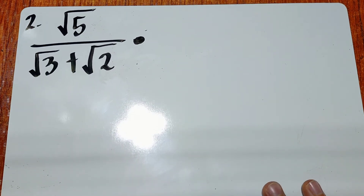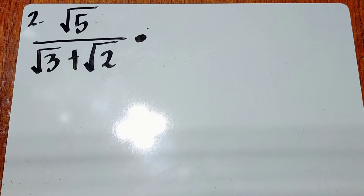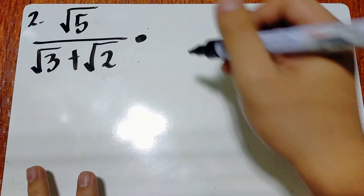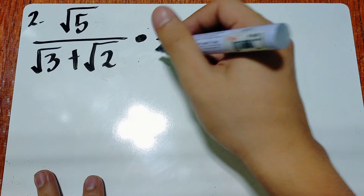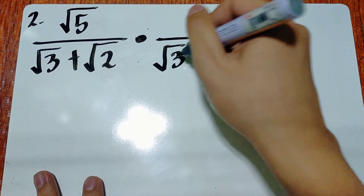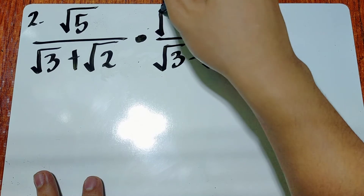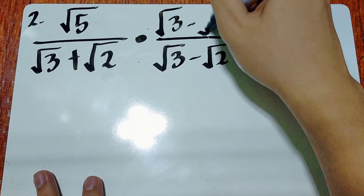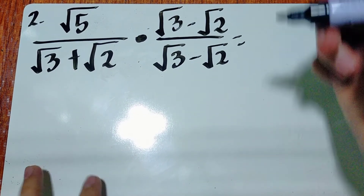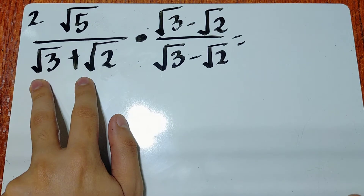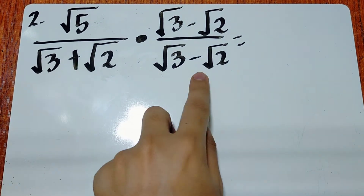Another example with a binomial denominator: square root of 5 over square root of 3 plus square root of 2. Again, we use its conjugate to solve easily. Just change the sign — the conjugate is square root of 3 minus square root of 2.